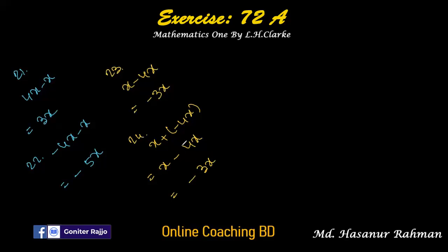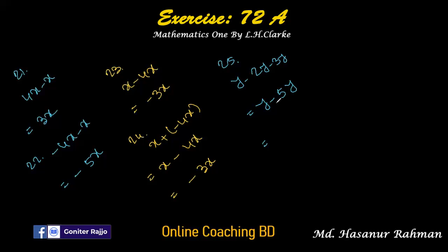Number twenty-five: y minus 2y minus 3y. The signs of 2y and 3y are both negative, so we add: 2 plus 3 is 5, giving y minus 5y. The signs of y and 5y are different so we subtract: 1 minus 5 is 4. We give the sign of the larger number, so the answer is minus 4y.